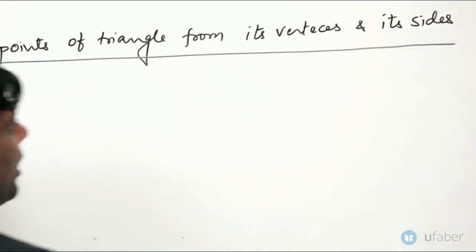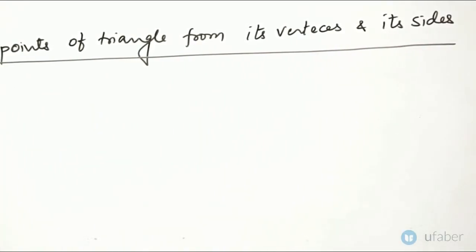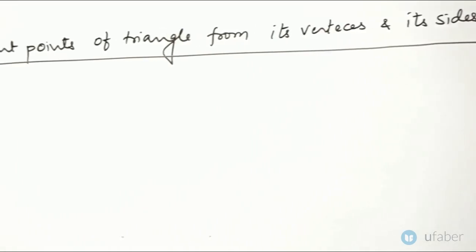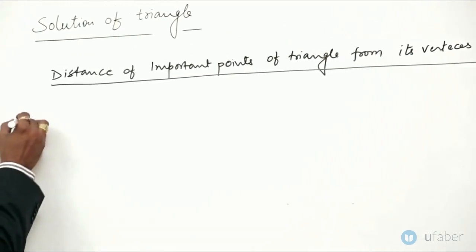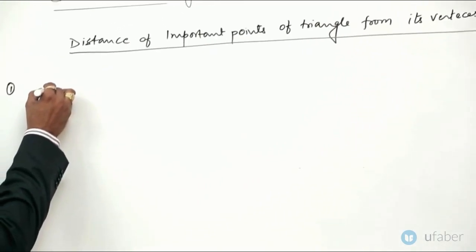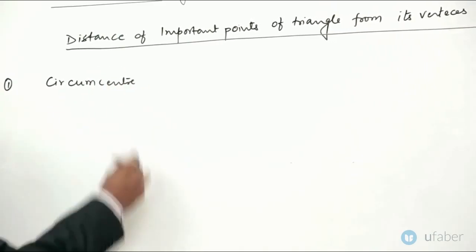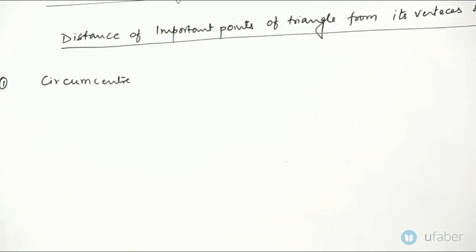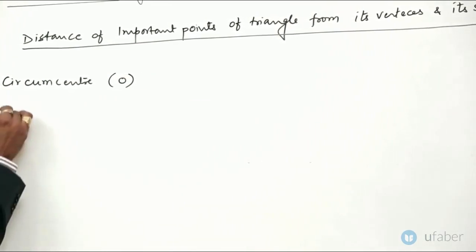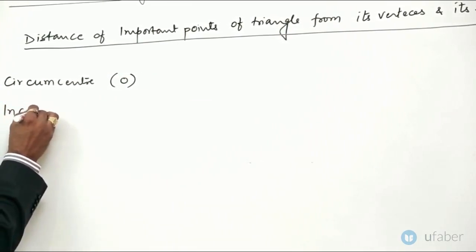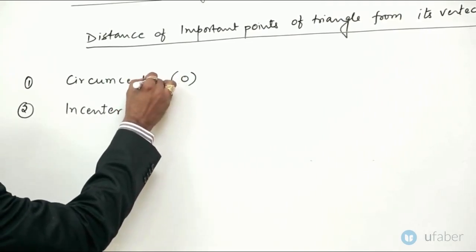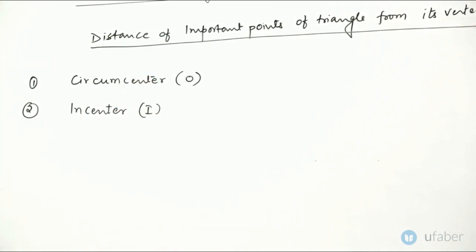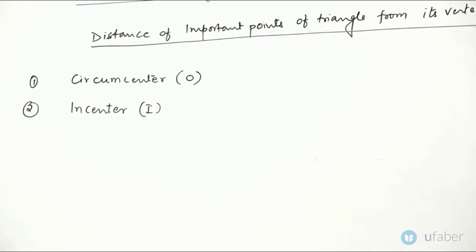Triangle of important points are vertices and sides. Points are first, circumcenter. Circumcenter, I should denote. Then third, excenter.